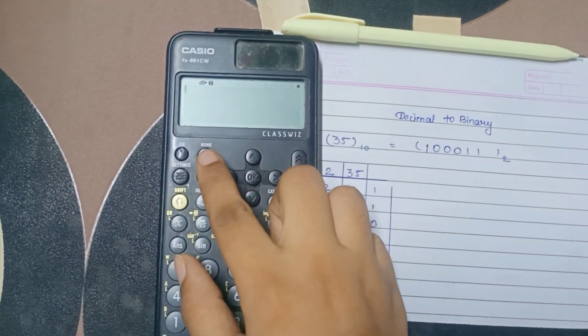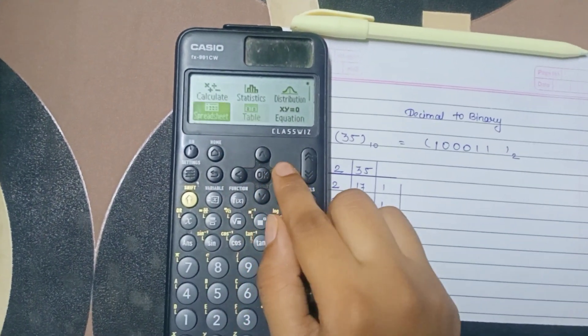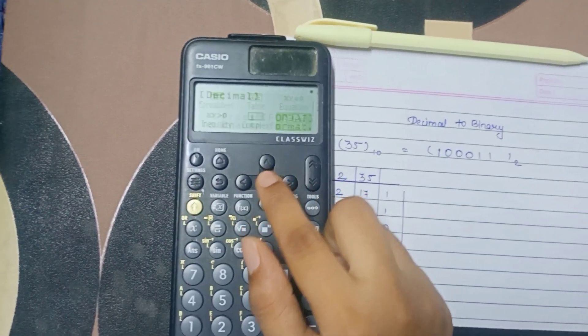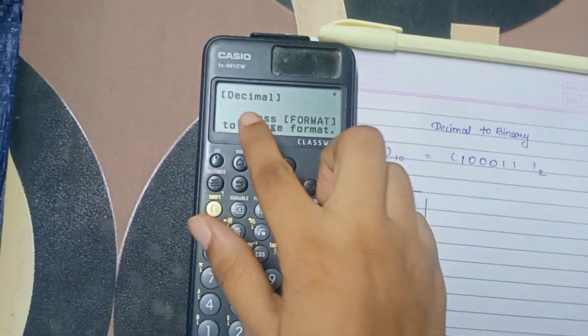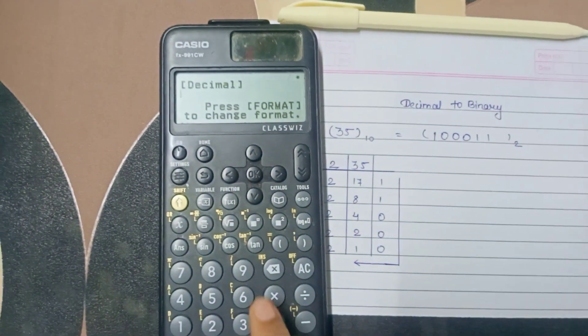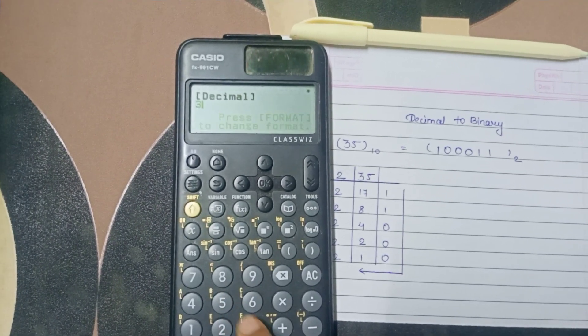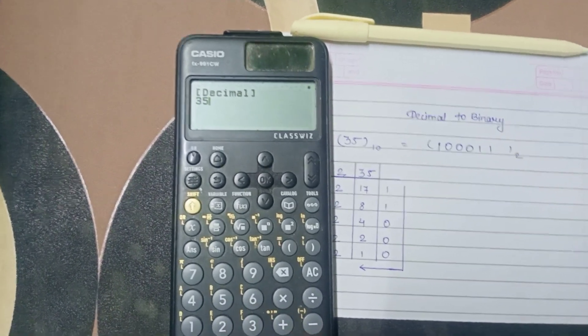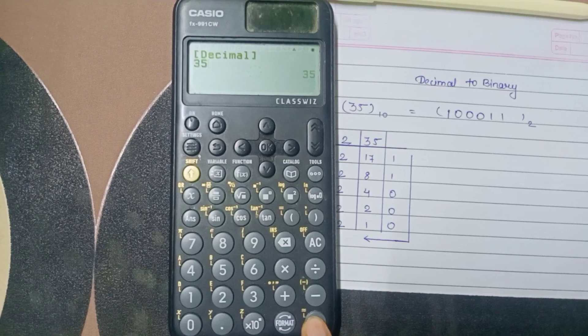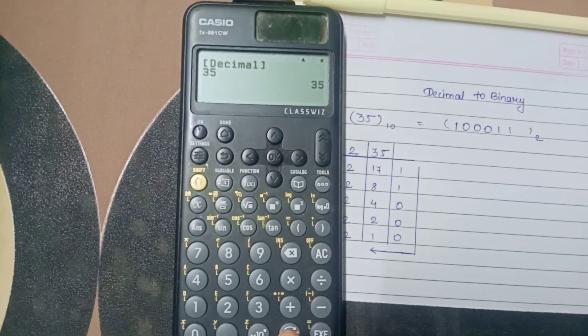For this you have to go to home, then go to base and now here already it is in decimal. So write the number 35, then press button exe, then change the format.